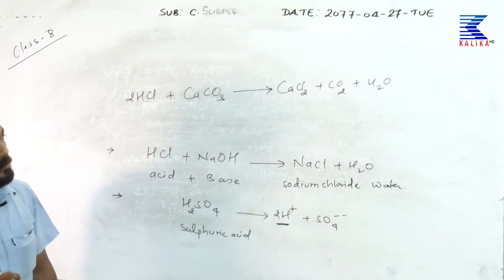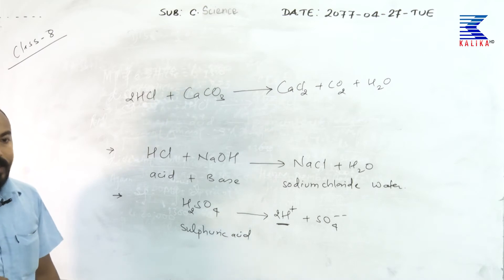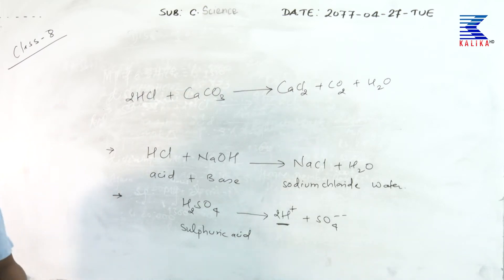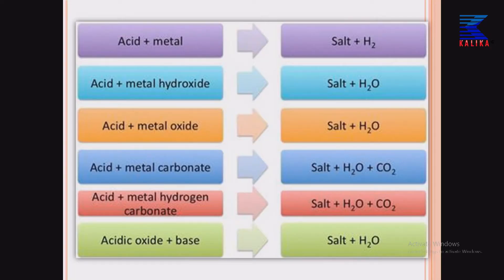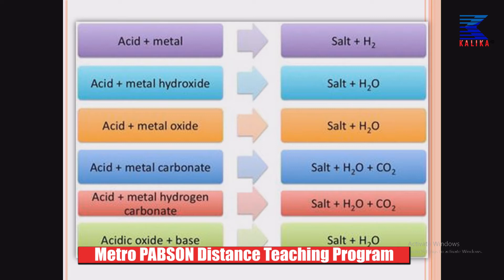Remember this point: while balancing a chemical equation, the hydrogen atom is always balanced last. Now let us look at the summary slide. You can see: acid + metal → salt + hydrogen gas; acid + metal hydroxide (base or alkali) → salt + water; acid + metal oxide → salt + water; acid + metal carbonate → salt + water + CO₂; acid + metal hydrogen carbonate (bicarbonate) → salt + water + CO₂; and acidic oxide + base → salt + water.